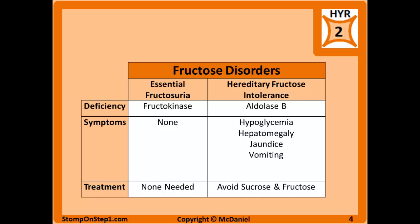Essential fructosuria is a deficiency of the first enzyme, fructokinase. This means you're not going to be able to convert fructose to fructose 1-phosphate, and the fructose you consume is going to build up. However, it doesn't really have any effects because fructose on its own doesn't really cause any problems — you just sort of pee out the excess fructose. So essential fructosuria doesn't really have a whole lot of symptoms, and no treatment is really necessary.